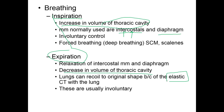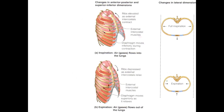The elastic component of the lungs helps you recoil back to a resting position so that you can breathe again. When you breathe in, the ribs go up and out, increasing the diameter. When you exhale, the ribs go down and in. You can also see the intercostal muscles — the red muscles in between the ribs — that help you breathe.